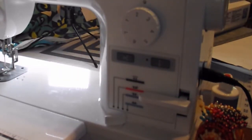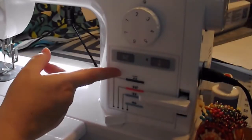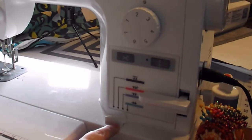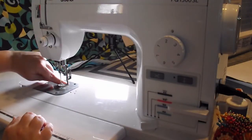The second dial that I want to cover is this dial. And this right here has four different settings. This is for adjusting the feed dogs. And the feed dogs are these little teeth that are in the plate here.